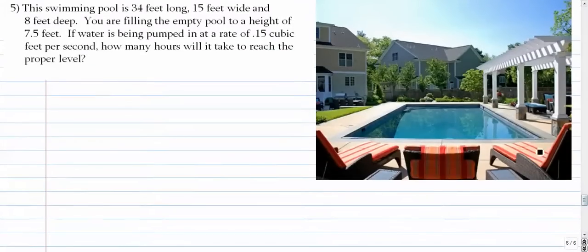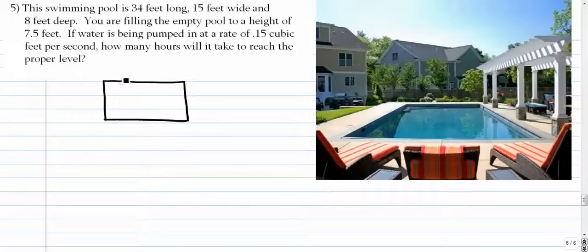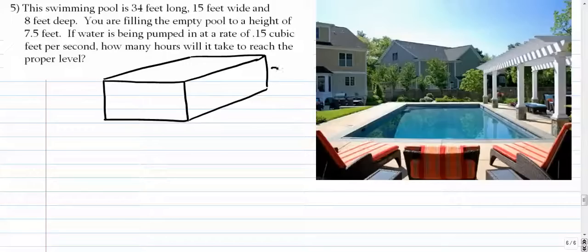Number five. So this pool is 34 feet long, 15 feet wide and 8 feet deep. So if I were to draw a little picture of this, it would look kind of like this. Something like this, where I've got 8, I've got 34, and I've got 15. And this is all filled with water, or at least most of it is.